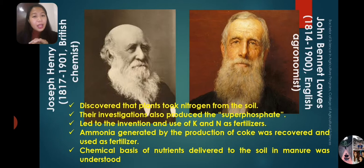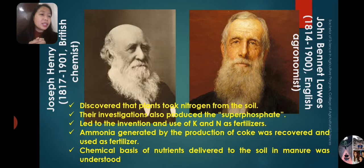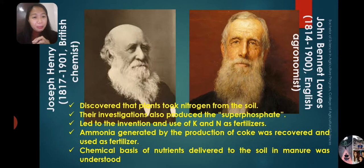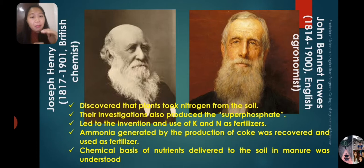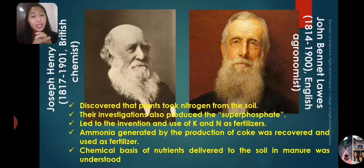Joseph Henry Gilbert, a British chemist who existed from 1817 to 1901, together with John Bennett Lawes, an English agronomist from 1814 to 1900, both discovered that plants took nitrogen from the soil. Their investigations also produced superphosphate and led to the invention and use of potassium and nitrogen as fertilizers. Ammonia generated by the production of coke was also recovered and used as fertilizer, and the chemical basis of nutrients in manure was understood because of their work.